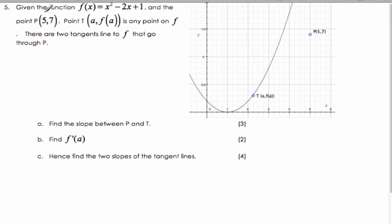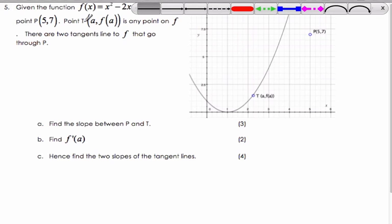Okay, for this problem here, we know we have this particular function and the point (5,7). And we are going to try to find, this is the point T at (a, f(a)).